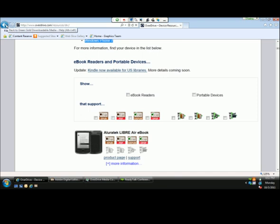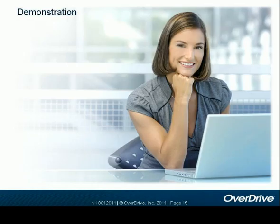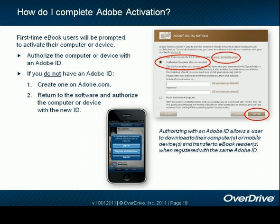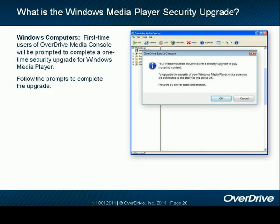That concludes our tour of the website. Going back to the slides to wrap up with some common questions you might encounter. Regarding Adobe activation: the first time a user installs Adobe Digital Editions, they'll see a prompt to authorize or not authorize their computer. We suggest authorization. Users create an email address and password and click Activate. Authorizing with an Adobe ID allows downloading to computers, mobile devices, and e-book readers when registered with the same Adobe ID. Another common question is about the Windows Media Player Security Upgrade — specific to Windows computers and the first time a user opens OverDrive Media Console. As a one-time upgrade, users go to Tools, select Upgrade, and follow the prompts.